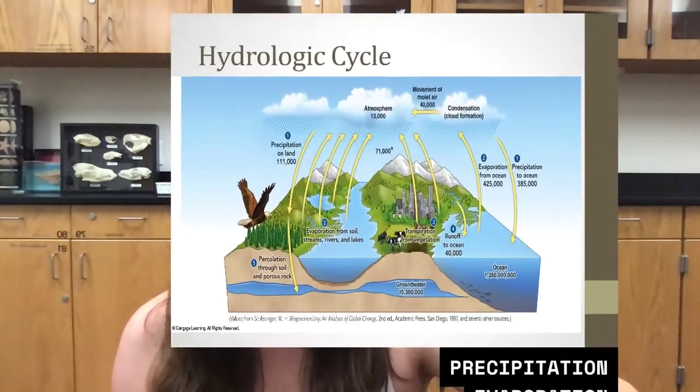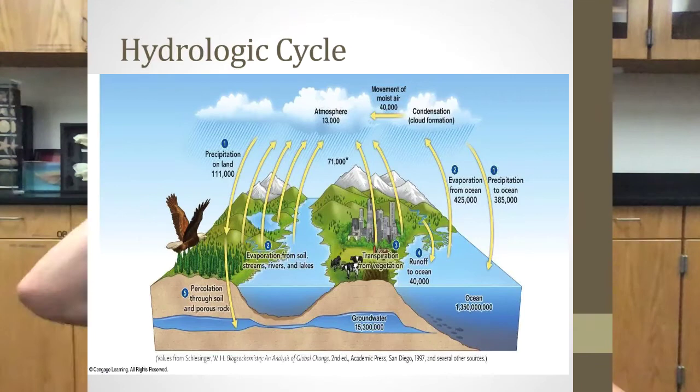The last one we want to look at is the water cycle, another very important cycle on Earth. Water is essential to life. So water actually continuously circulates from the ocean to the atmosphere to the land and back to the ocean.